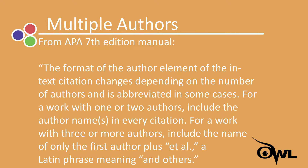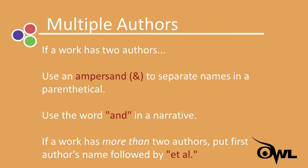Sources with multiple authors have special rules, but they're easy to follow. We're now going to quote directly from page 266 of the APA 7th edition manual: The format of the author element of the in-text citation changes depending on the number of authors and is abbreviated in some cases. For a work with one or two authors, include the author names in every citation. For a work with three or more authors, include the name of only the first author plus et al., a Latin phrase meaning 'and others.' In parenthetical citations for a work with two authors, use an ampersand between the names. In narrative citations, however, use the word 'and.' If a work has two authors, use an ampersand to separate their names in a parenthetical and the word 'and' in a narrative citation. If there are more than two authors, just put the first author's name followed by et al.